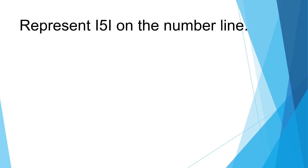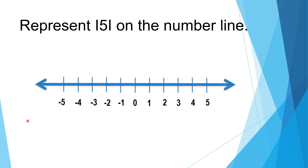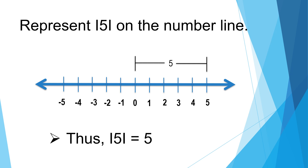Example: Represent the absolute value of positive five on the number line. What is the distance of positive five from zero? Let's count how many units. From zero to positive one is one unit. Counting: one, two, three, four, five — five units. Thus, the absolute value of positive five is equal to five.